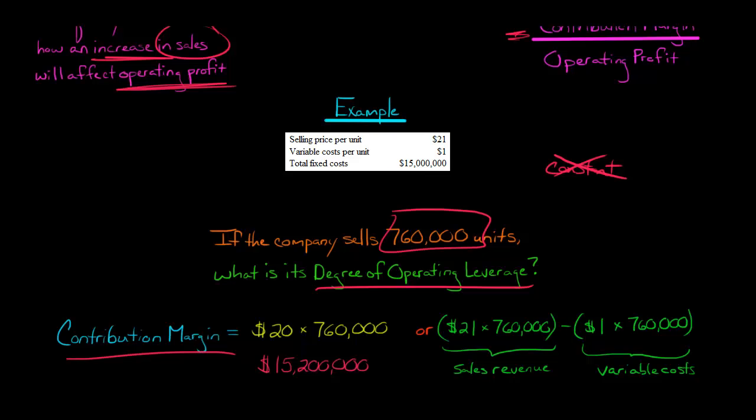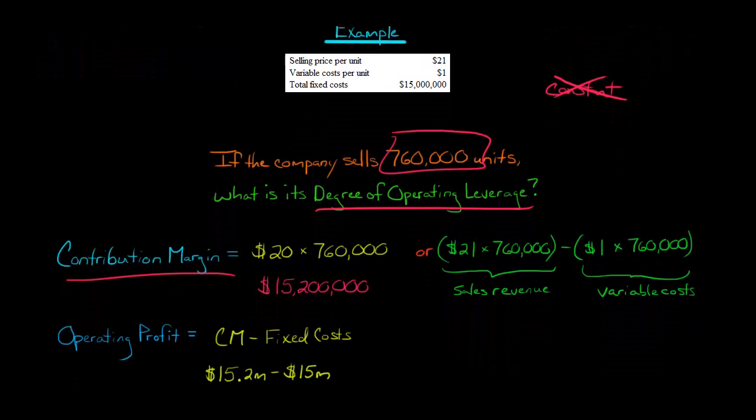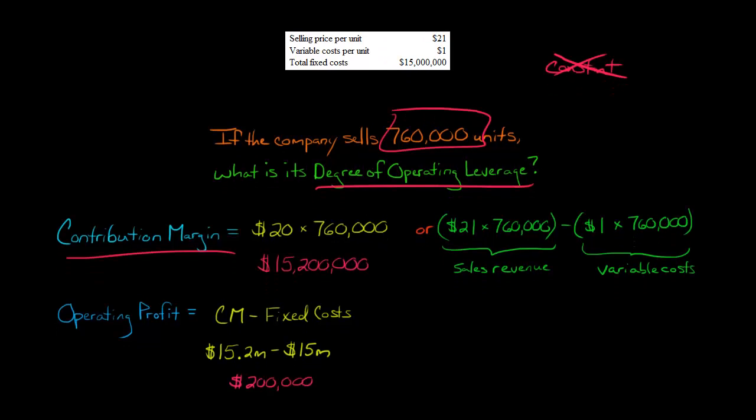So now we know the numerator to calculate our degree of operating leverage. Now we've got to figure out operating profit. Well, operating profit, it's nice that now we know the contribution margin because the total contribution margin minus the fixed cost is the operating profit.